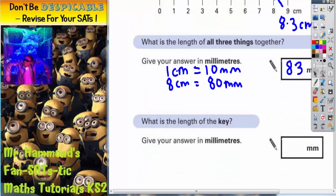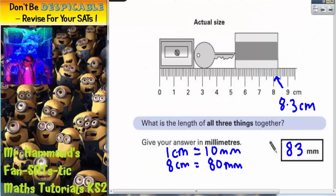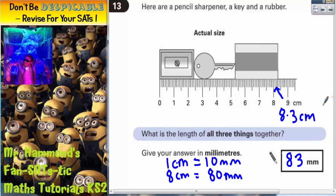The next part of the question says, what is the length of the key? Also, we've got to give this in millimeters. So we're interested in just the key. Now, what we can't do is take this measurement here, which is 5.3 centimeters, which is 53 millimeters. We can't just say that that's the length of the key, because the key doesn't start at zero.